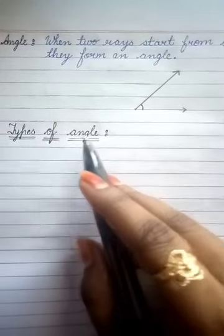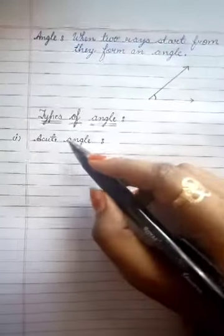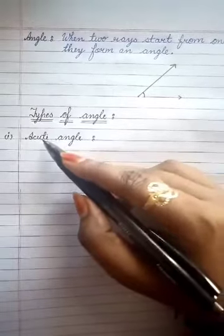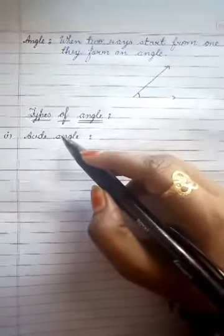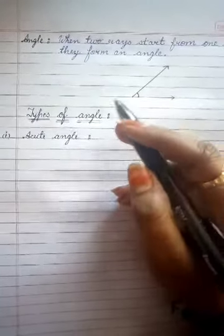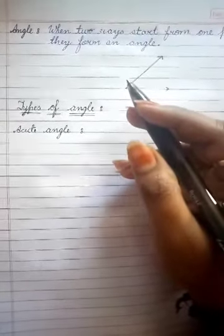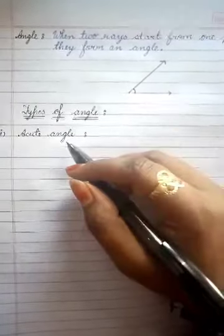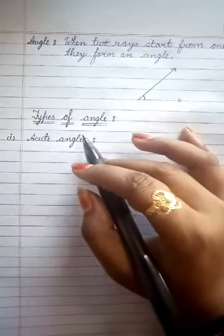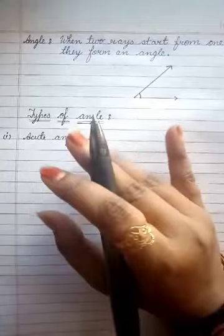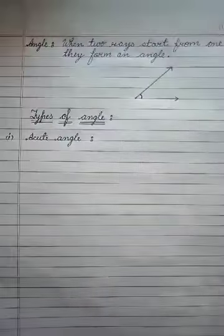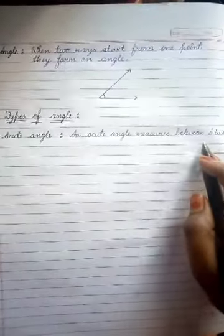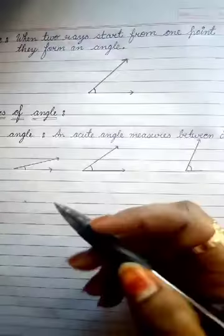Let us now discuss types of angles. The first type is acute angle. All angles which are less than 90 degrees are called acute angles. Just as we measure length in metres and centimetres, and weight in grams and kilograms, similarly we measure angles in degrees. An acute angle measures between 0 and 90 degrees. Here, all three angles shown are acute angles because they are less than 90 degrees.